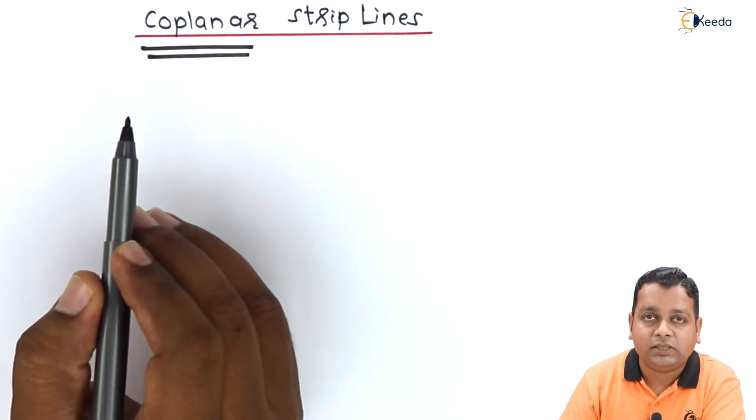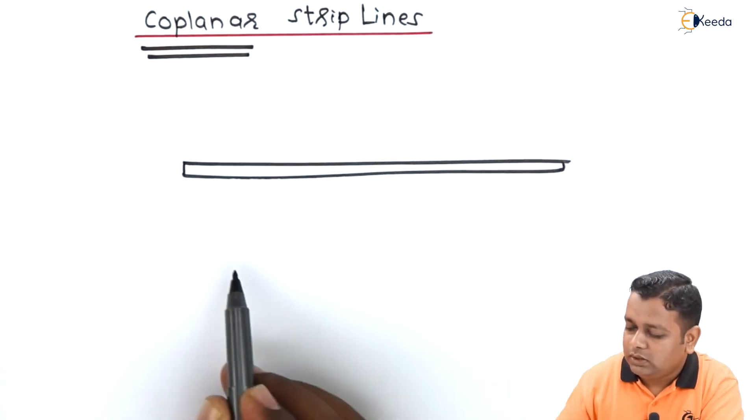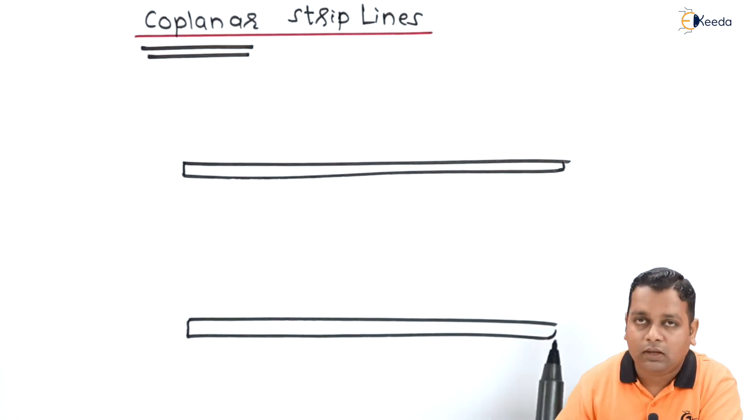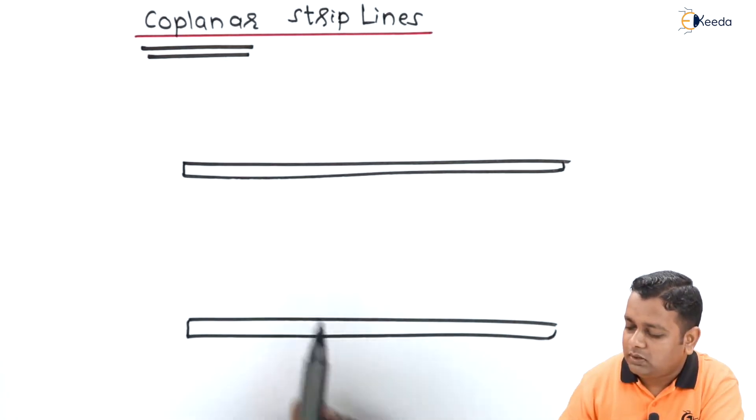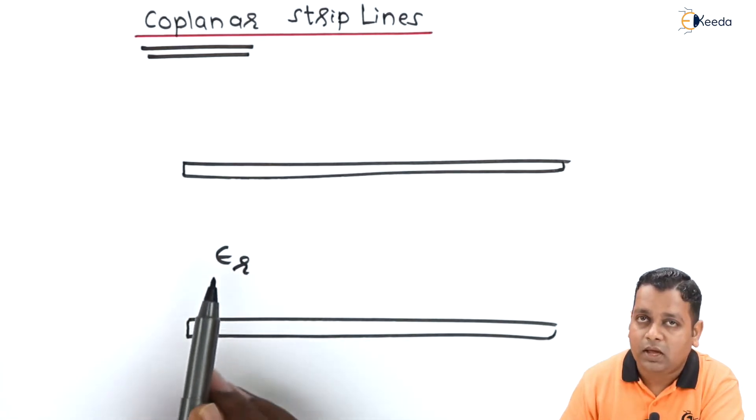In the basic structure of strip line, we have such a ground plane. This is another ground plane, and it is filled with certain dielectric material, the relative dielectric constant we represent as epsilon subscript r.